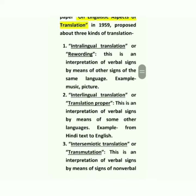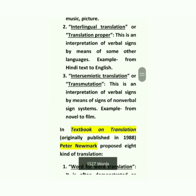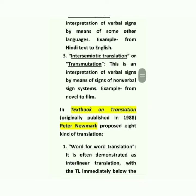Roman Jakobson, in his seminal paper 'On Linguistic Aspects of Translation' in 1959, proposed three kinds of translation. First, intralingual translation or rewording — this is an interpretation of verbal signs by means of other signs of the same language; an example is music or picture. Second, interlingual translation or translation proper — this is an interpretation of verbal signs by means of some other language; example: from Hindi text to English. Third, intersemiotic translation or transmutation — this is an interpretation of verbal signs by means of non-verbal sign systems; example: from novel to film.